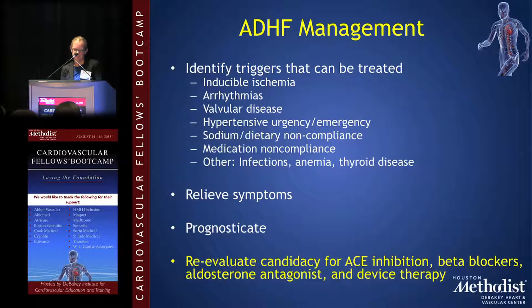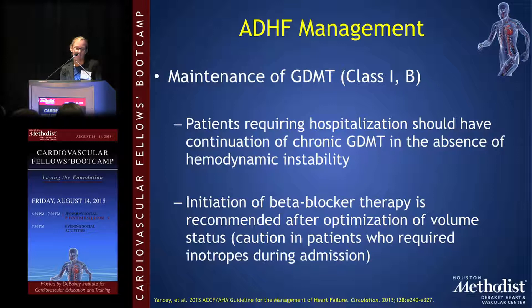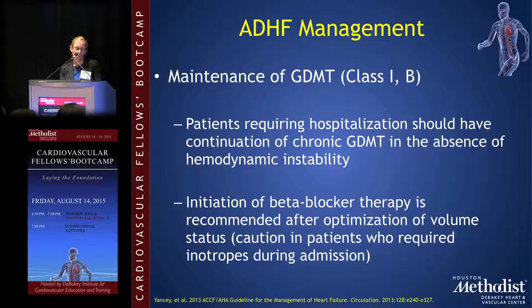One of the mainstays of therapy — a class one indication, level of evidence B — is maintenance of goal-directed medical therapy. For patients already on chronic goal-directed medical therapy (ACE inhibitors, beta blockers, ARBs) who are admitted with acute decompensation, it is important to maintain these medications unless there is hemodynamic instability such as hypotension. If patients were not previously on these medications, once volume status is optimized, you should consider initiating beta blocker therapy — with more care and slower titration if inotropic support was required.